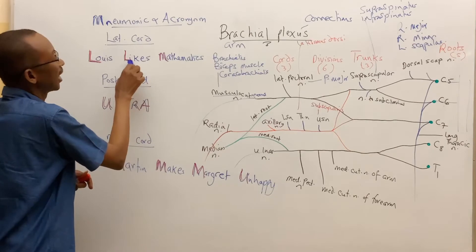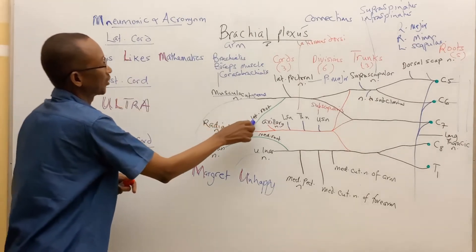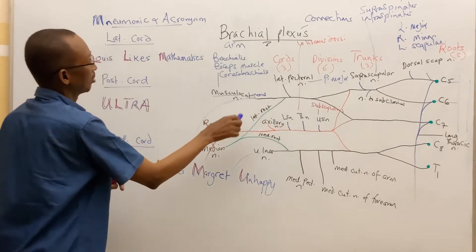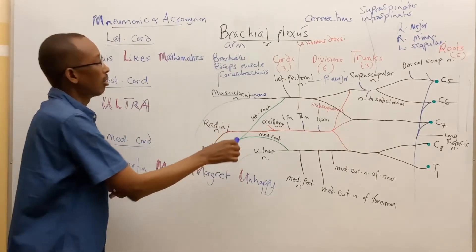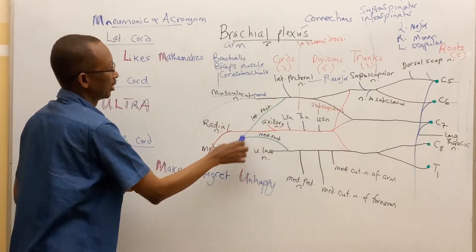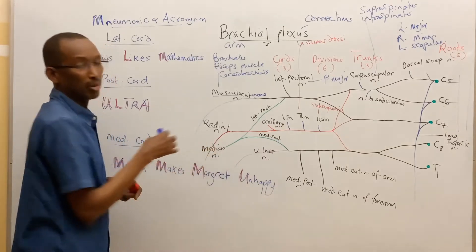The likes, L for likes, is for lateral root of the median nerve. The lateral root of the median nerve, if you can remember, combines with the medial root of the median nerve from the medial cord to form the median nerve.